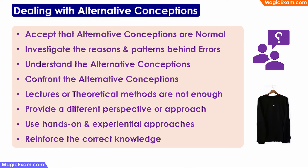Let us now look at how we can deal with alternative conceptions in the classroom. The first step is to accept that alternative conceptions are normal and everyone carries some type of alternative conception in their mind — it might be small or big, but everyone has one. Whenever we come across errors committed by children, we have to investigate the reasons and patterns behind such errors: are they because of simple mistakes or because of alternative conceptions? If they are because of alternative conceptions, we have to understand them first, because we cannot correct anything we cannot understand.